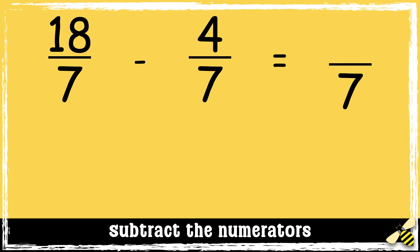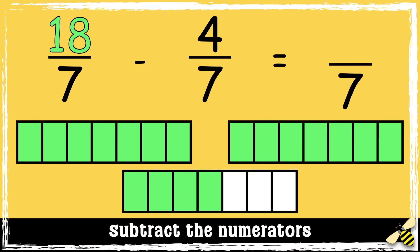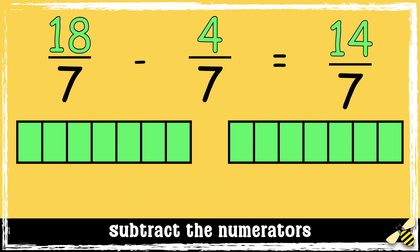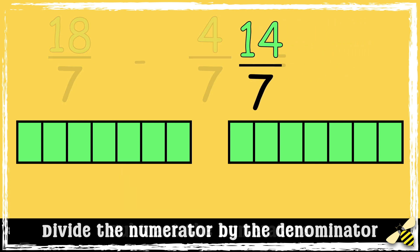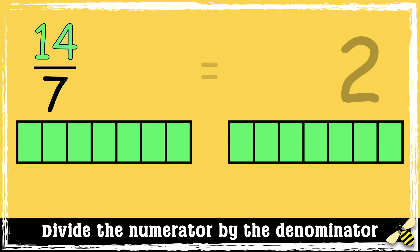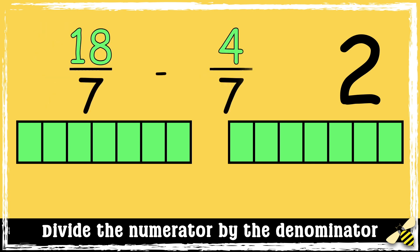Let's have a look at one more: eighteen sevenths take away four sevenths. We need to subtract the numerators — eighteen take away four equals fourteen. So we're left with an improper fraction and we need to convert it to a mixed number. We have two wholes and nothing left over, so the answer is two.